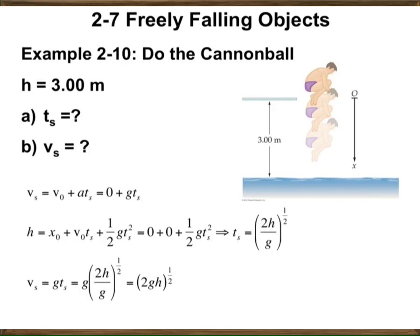Let's do an example. A swimmer jumps from a platform with a zero initial velocity. In this problem, we have chosen the increasing x direction as downward, so acceleration is taken as plus g, because acceleration is always downward. The question asks: after falling three meters, what is the time for the swimmer to hit the water surface, and what is the impact velocity?